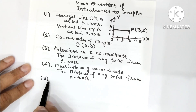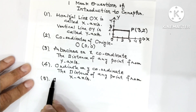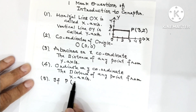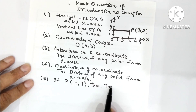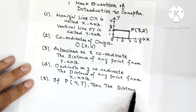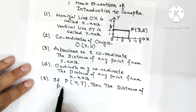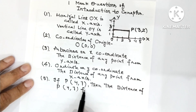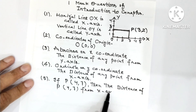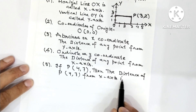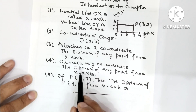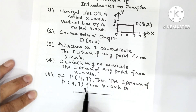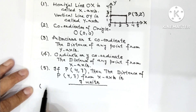Sometimes a question like this is asked: if P has coordinates (4, 7), then the distance of P from the X-axis is? So here we have understood that when it is asked what is the distance from the X-axis, the definition of ordinate is applied. So the distance from the X-axis will be 7 units.